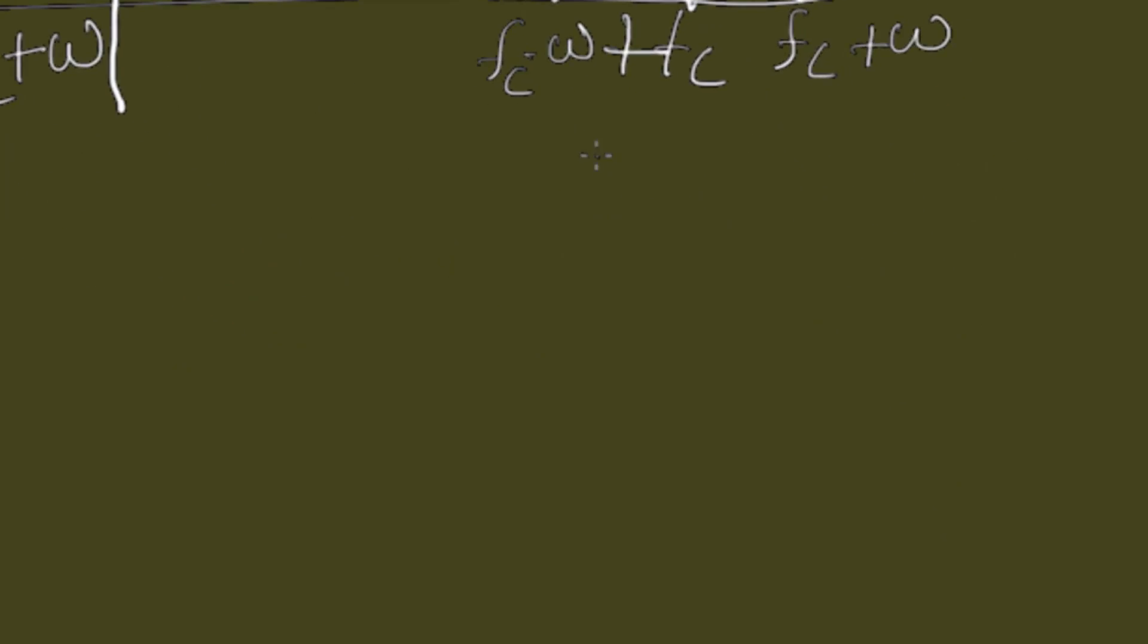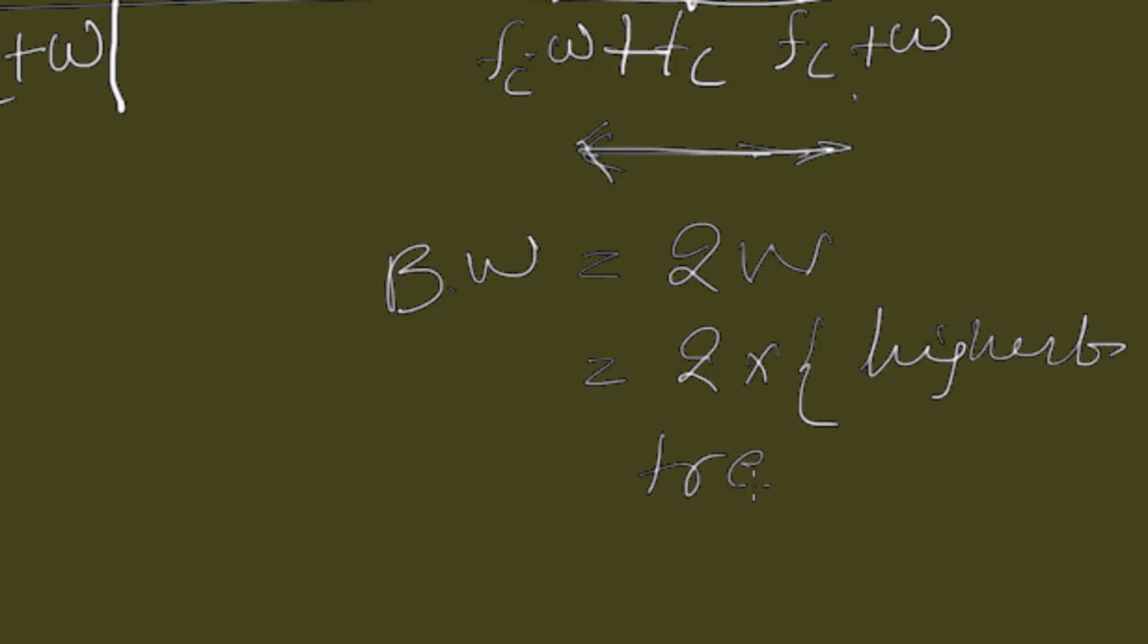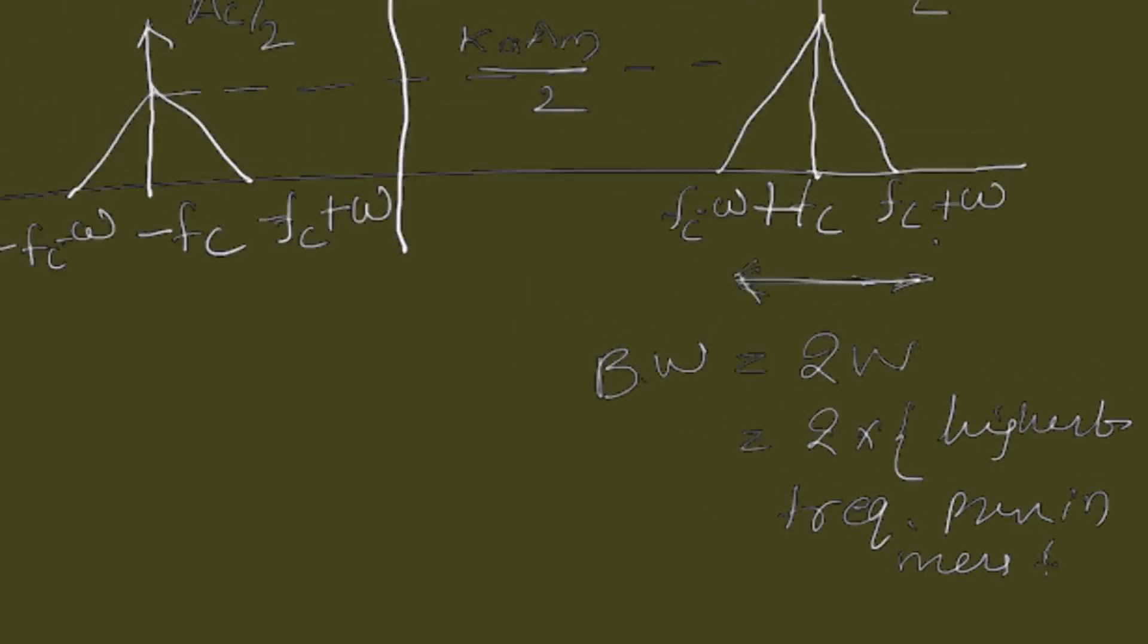From this, we can easily find out the bandwidth required for the transmission of AM signal is high frequency minus low frequency. Then, we will get 2W, bandwidth for the transmission. 2 into W is nothing but the highest frequency present in the message.